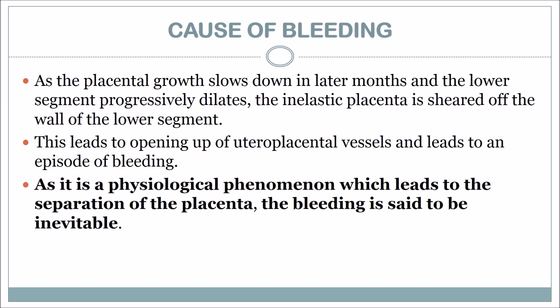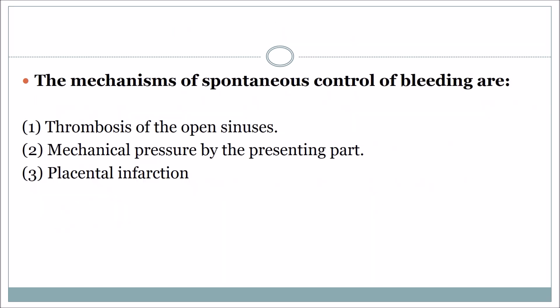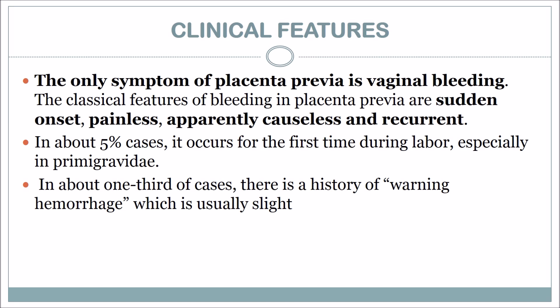In the last few months, as the lower segment progressively dilates, the inelastic placenta is sheared off the wall of the lower segment. This leads to opening of the utero-placental vessels and an episode of bleeding. As this is a physiological phenomenon leading to separation of the placenta, the bleeding is said to be inevitable. The mechanisms of spontaneous control of bleeding are thrombosis of the open sinuses, mechanical pressure by the presenting part, and placental infarction.